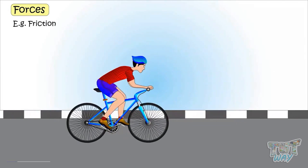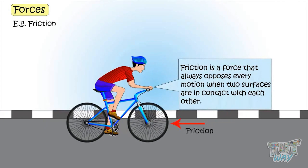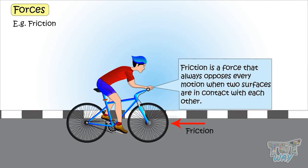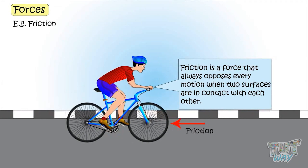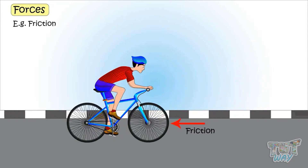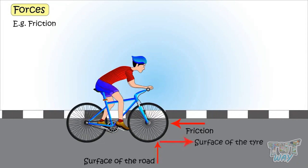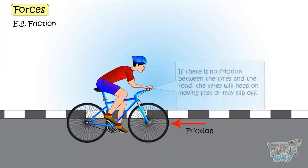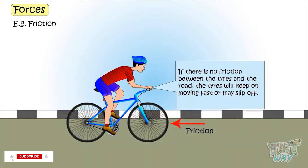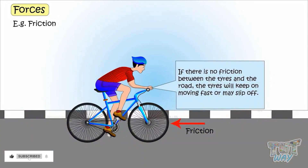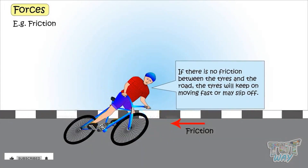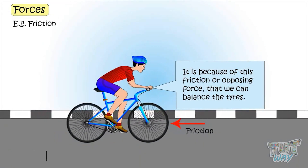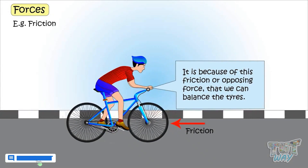Then there is friction. Friction is a force that always opposes any motion when two surfaces are in contact with each other. So here, the friction force is between the surface of the road and the surface of the tires. If there would be no friction between the tires and the road, the tires would keep moving very fast and even slip off. It is because of this friction, or the opposing force, that we can balance the tires.